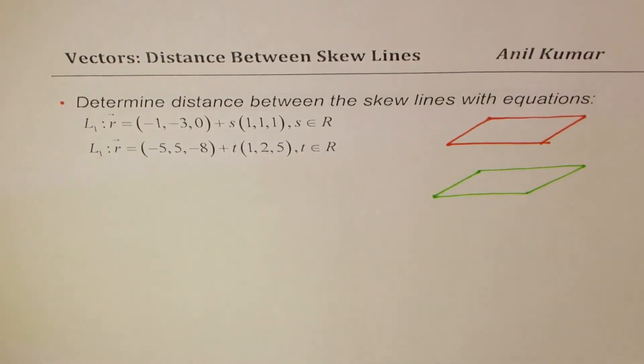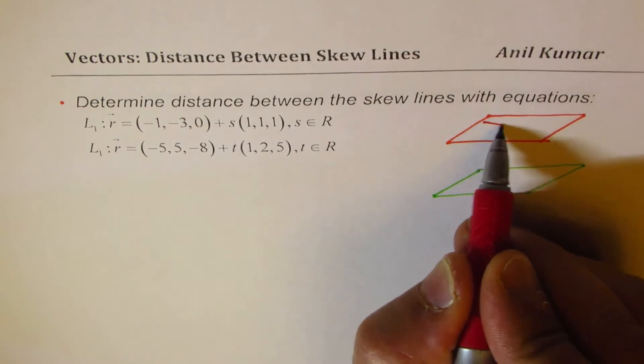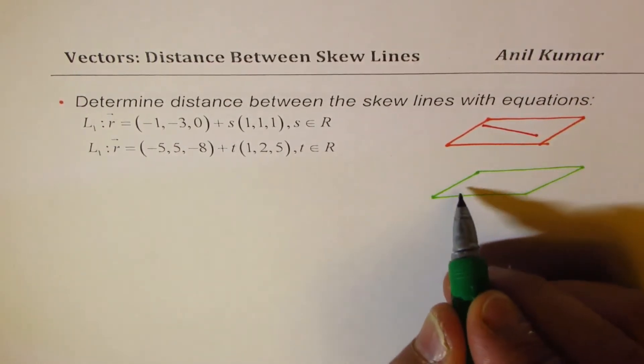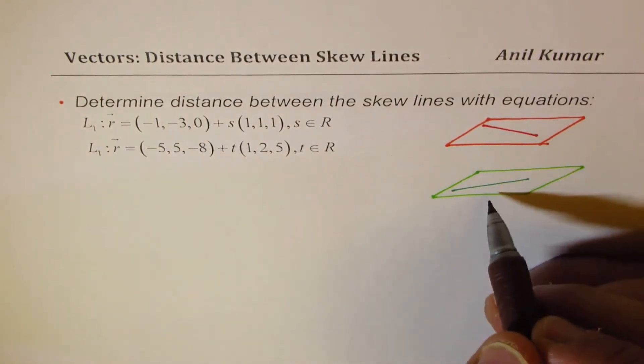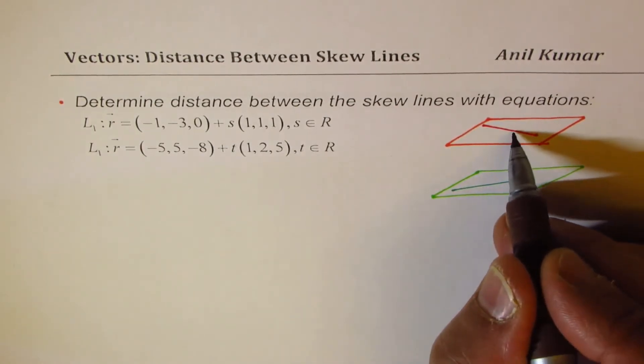Now we are talking about lines in these planes, so let us say one of the line is kind of like this, the other one is kind of like this. So these are the lines in the given planes.